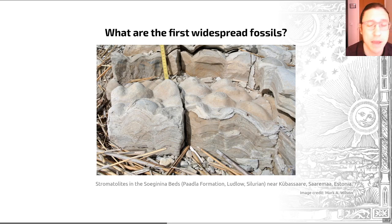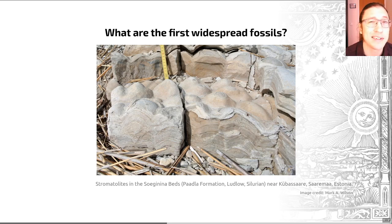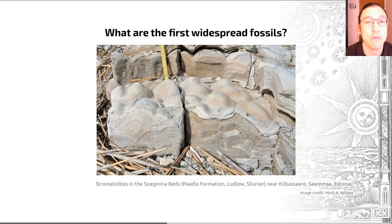For example, there was a Nature paper in 2016 which suggested that there were 3.7 billion year old stromatolites. The reason I don't focus on those as evidence for life very early in life history is because when you get stromatolites this old, it's very difficult to prove that they're biogenic — having a biological origin — as opposed to, for example, being a mineral crust.